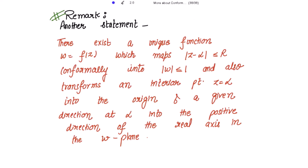As a remark, the theorem can also be stated as: there exists a unique function w = f(z) which maps |z - α| ≤ r conformally onto |w| ≤ 1, transforms the interior point z = α into the origin, and maps a given direction at α into the positive direction of the real axis in the w-plane.